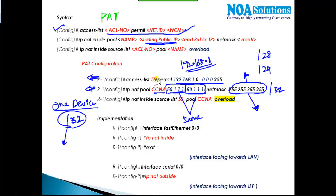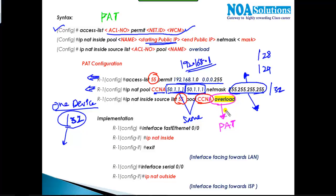Finally, we translate the private addresses defined in ACL 55 using the pool named CCNA, and we must add the keyword 'overload'. When the overload keyword is added, it performs PAT. Without it, it works as dynamic NAT. Overload essentially means: take extra load on the same public IP and translate all private IP addresses with only one registered public IP.